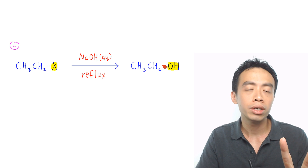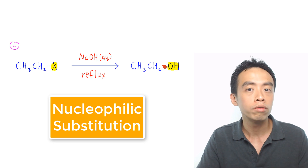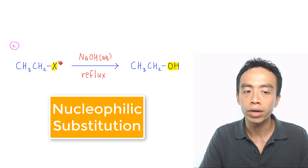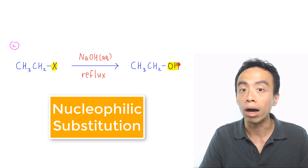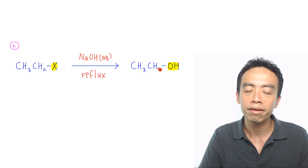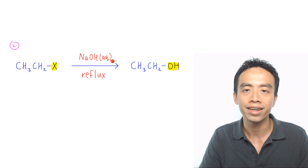Must-know reaction number 2 of alkyl halide is the nucleophilic substitution reaction of our halide to form our alcohol. This is done via NaOH aqueous reflux.